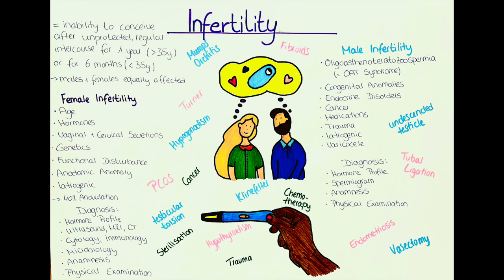Genetic causes can also lead to infertility. Those include Turner syndrome, where women have the karyotype 45,X — so one X chromosome is missing. Other causes are diseases or functional disturbances of the reproductive system, including endometriosis, uterine fibroids, or congenital anomalies. The last group of causes is iatrogenic infertility, which includes sterilization — for example by tubal ligation or hysterectomy — as well as chemotherapy or radiation.